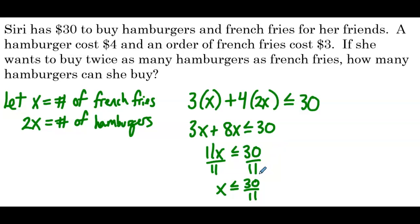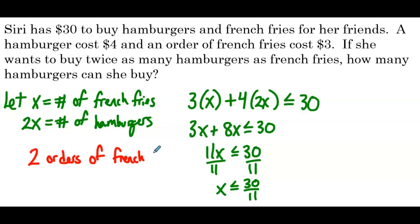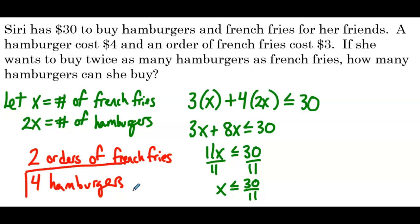So in context, how many orders of french fries can we make? It has to be less than 30 over 11, so we can make 2 orders of french fries. That means we'll have 4 hamburgers. The word problem only wanted the number of hamburgers she can buy — we had to use the number of french fries to get that — but the answer is 4 hamburgers. It's not a perfect value, but we can come up with an answer based on context.